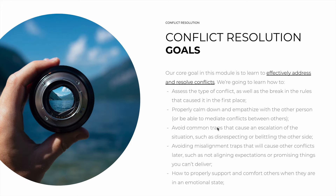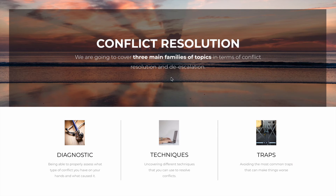We'll also cover how to avoid the common traps that cause an escalation of the situation, such as disrespecting or belittling the other side, how to avoid misalignment traps that will cause other conflicts later, such as not aligning expectations or promising things that you can't deliver, and finally, how to properly support and comfort others when they are in an emotional state, among other things.